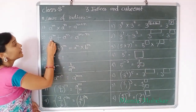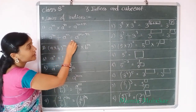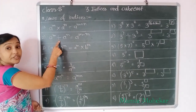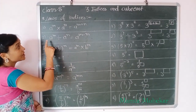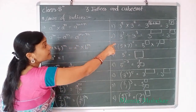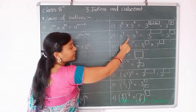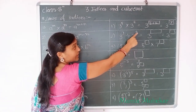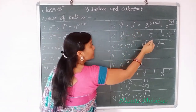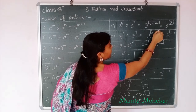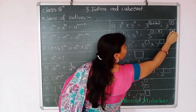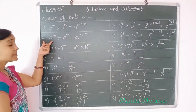Our next rule is: A raised to power M divided by A raised to power N equal to A raised to power M minus N. When in a division example the bases are same, then we do subtraction of indices. Example: 3 raised to power 7 divided by 3 raised to power 9. Here is the division and bases are same, so we do subtraction of indices: 7 minus 9 gives minus 2.